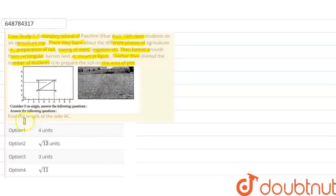So we have this plot. And basically the teacher divided the area of land for preparation of soil, sowing of seed, and irrigation. So we need to find the length of the side AC. First, A and C, these points are coordinates. We can easily use the distance formula to find the length.